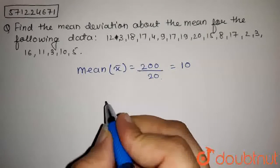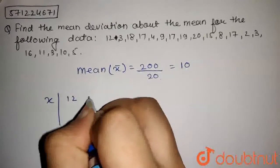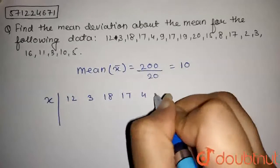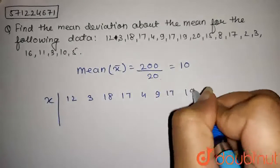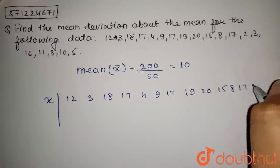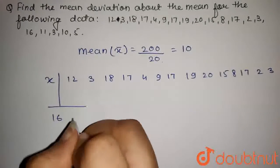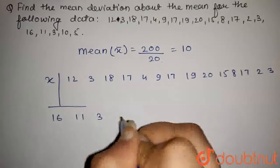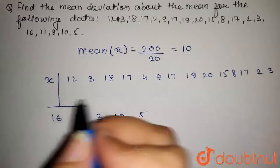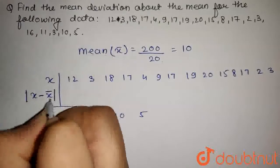Now, we have to find the mean deviation. So, data is 12, 3, 18, 17, 4, 9, 17, 19, 20, 15, 8, 17, 2, 3, 16, 11, 3, 10, and 5. So, this is the data. Now, we will find x minus x bar, modulus of x minus x bar.